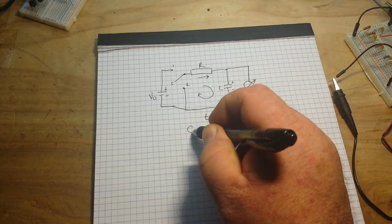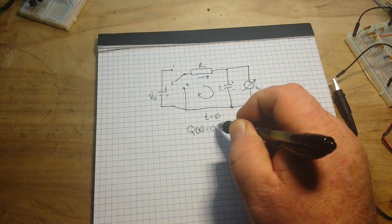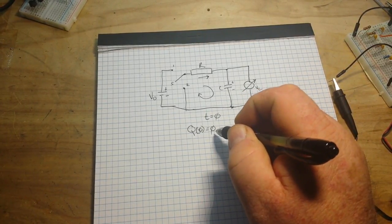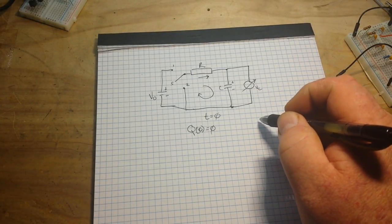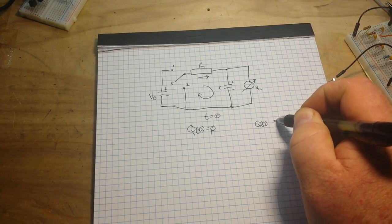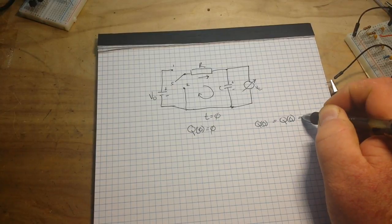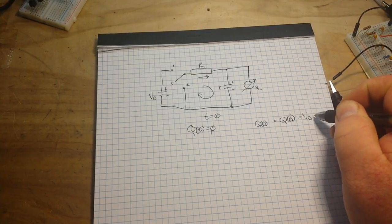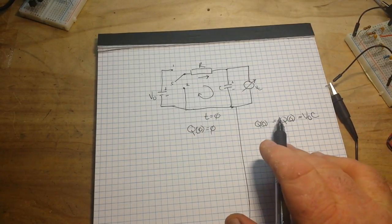So if we start at T0, Q0, our charge, is equal to zero. And on our discharge side, Q0 is equal to Q0 equal to V0 times C. Okay, so this is our charge and our discharge.